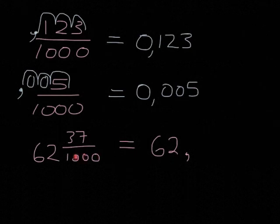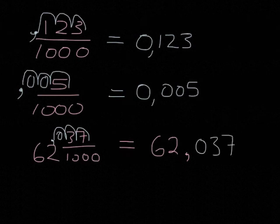and so we know that we have to go 1, 2, 3 steps back before we put the comma, and we have to have a 0 in the space, so we know it will be 62, 0, 3, 7.